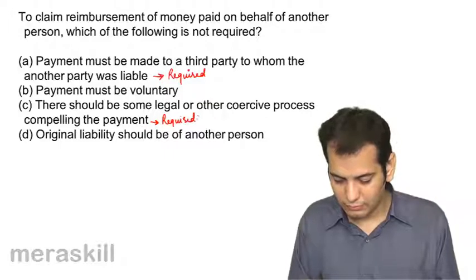A promised to give Rs. 50,000 to B if B is selected as the president of a cooperative society. Is it: A) void contract, B) contingent contract, C) wagering contract, D) illegal contract? It is a clear case of wagering contract. If B becomes president, A will give him Rs. 50,000, but there is no business being conducted here, so it is a wagering contract.